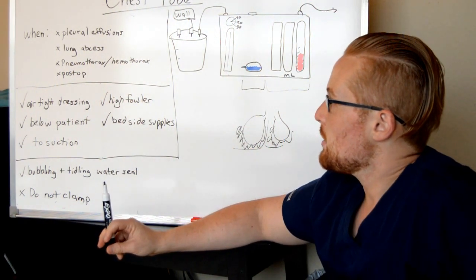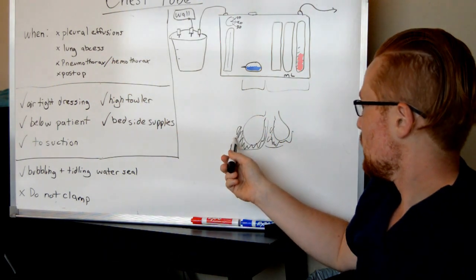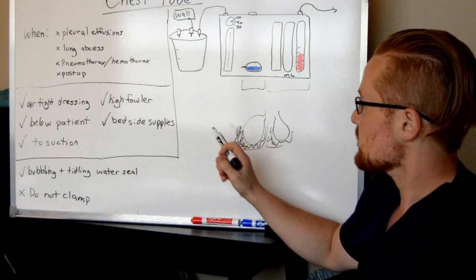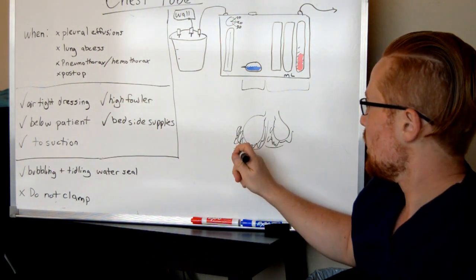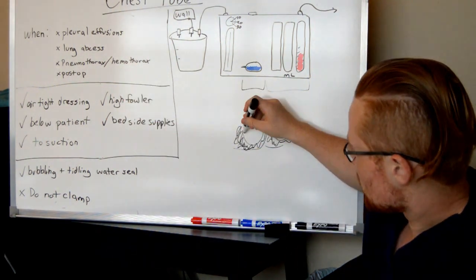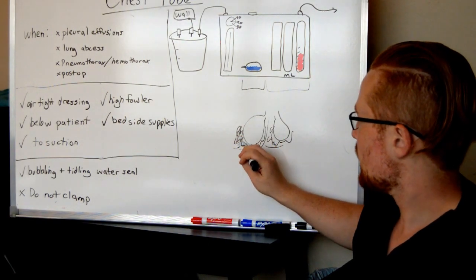Another example would be if a patient has a pleural effusion is liquid here. Now, if it is air that's in this space, it's called a pneumothorax, and if it's blood in this space, it's called a hemothorax. Also, you can have a lung abscess, so you could have just like an empyema and have infected fluid in this area.